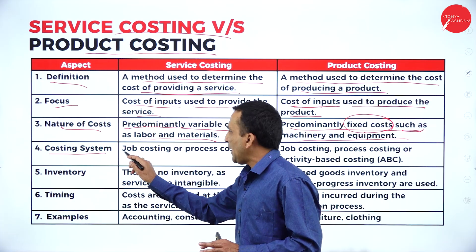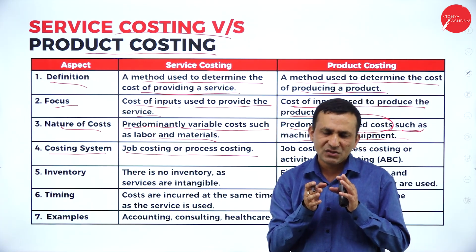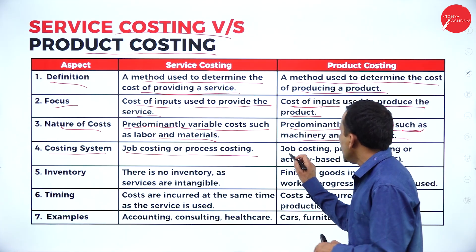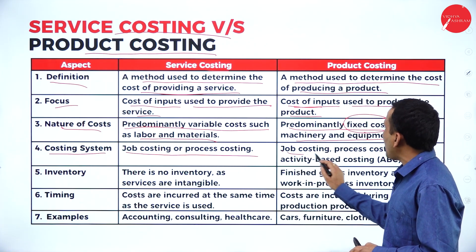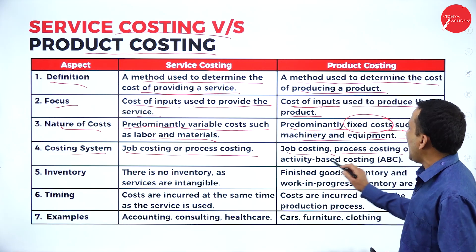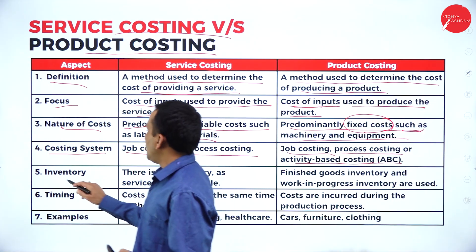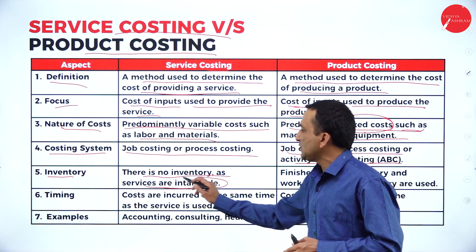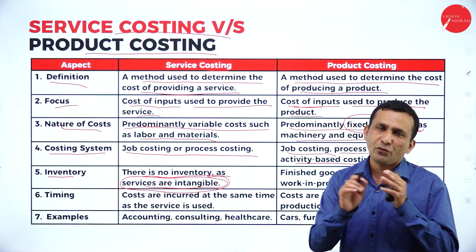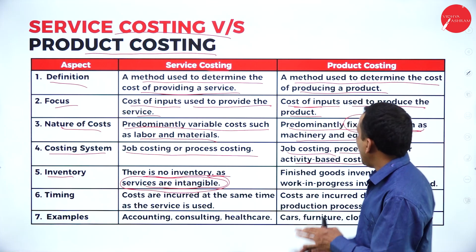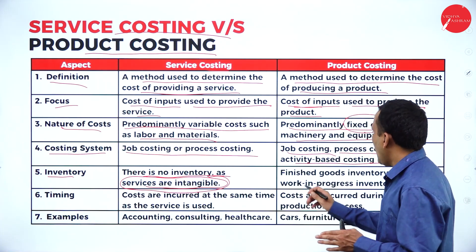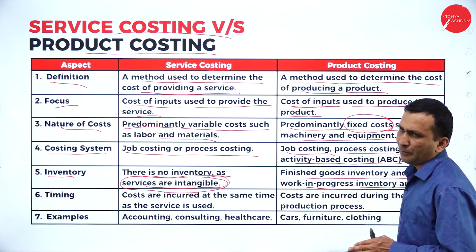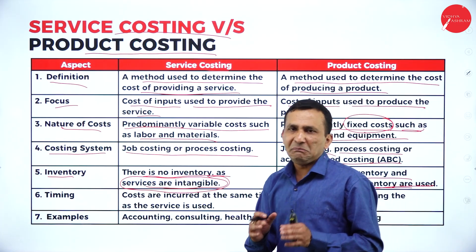Under the costing system: for service costing, job costing or process costing is most suitable, because each service is unique. Under product costing, job costing, process costing, and activity-based costing are all possible. Regarding inventory — there is no inventory in services, as services are intangible and cannot be stored. For physical products, finished goods inventory, work-in-progress, and semi-work-in-progress are very important.